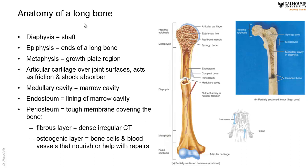Taking a long bone as an example: the shaft is called the diaphysis, and the ends are called the epiphyses. The border between the diaphysis and the epiphysis is called the metaphysis, which is the site of bone growth in length, where there is a growth plate. The ends of long bones are articular and covered with cartilage — most often hyaline cartilage — which acts as a shock absorber and reduces friction between bones in a joint.